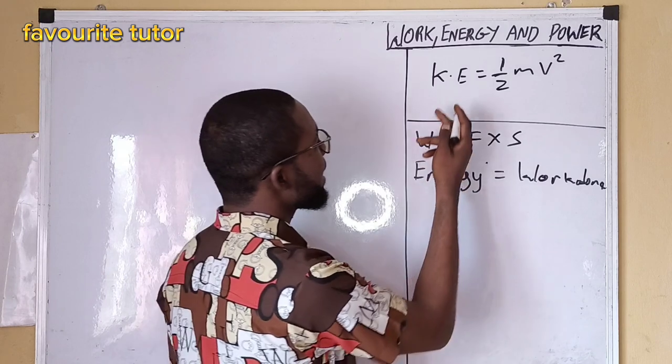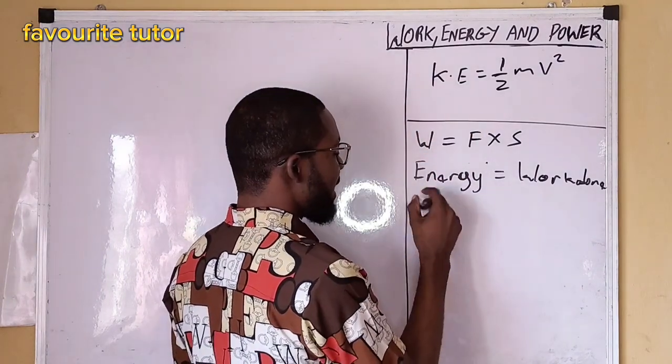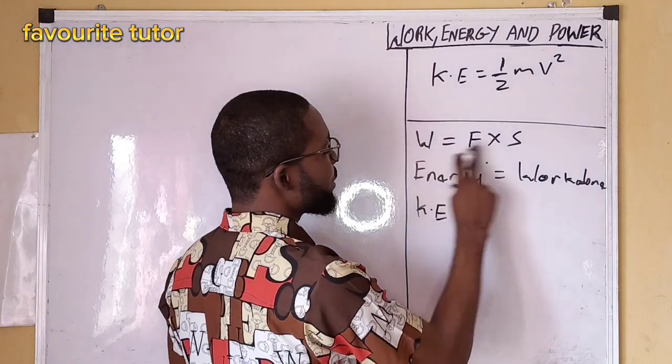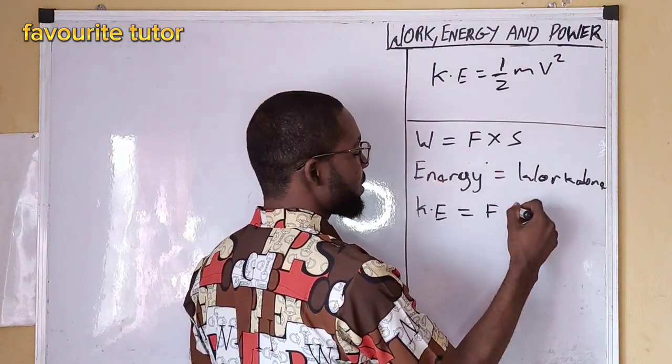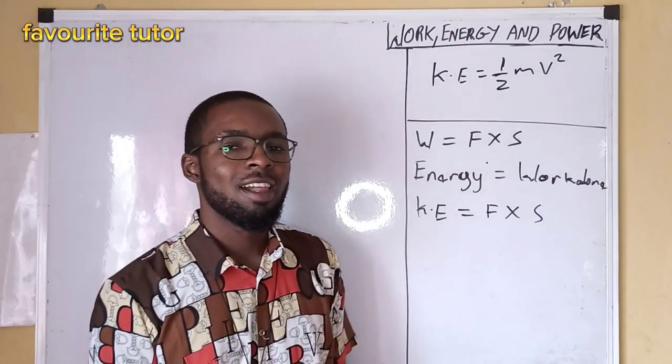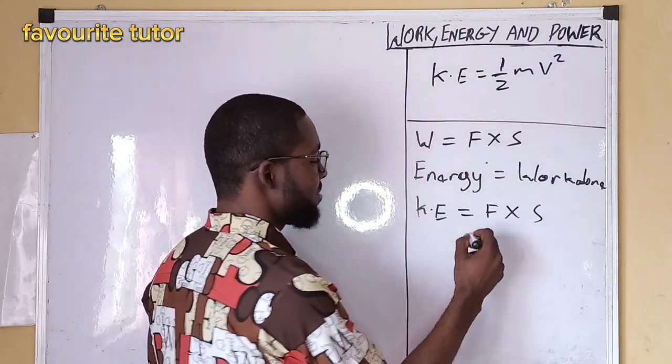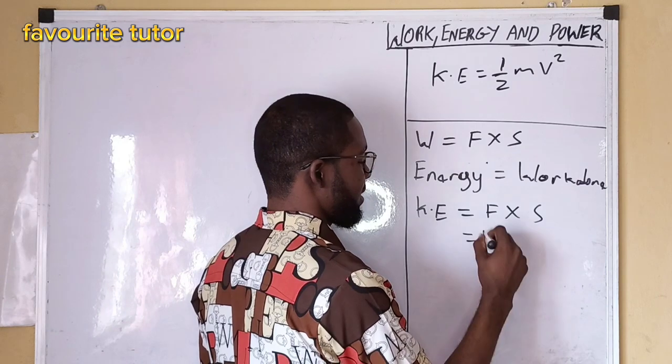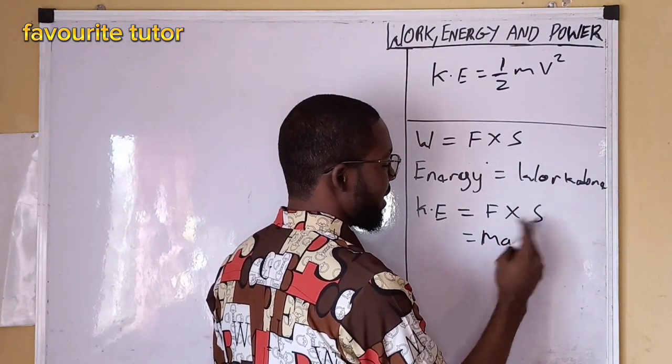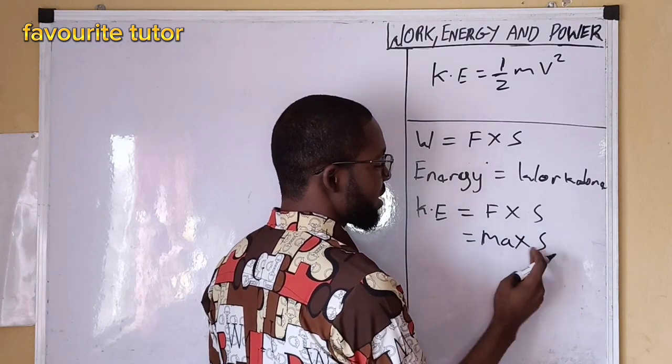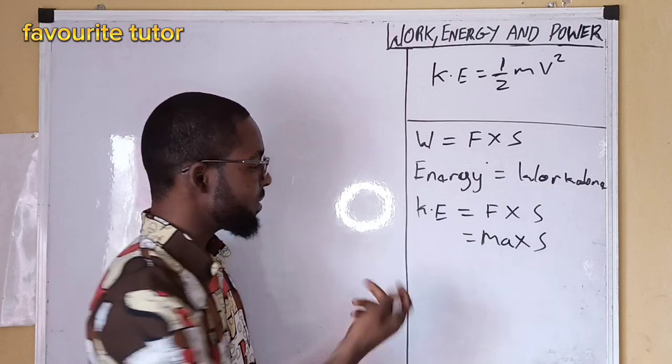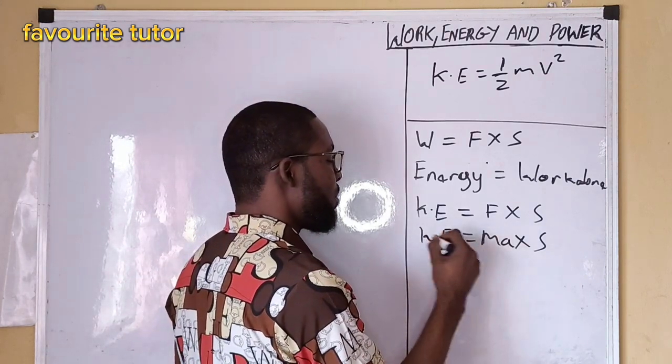So I can also say that kinetic energy equals what's the equation for work done? Force times distance, which is the same thing as what? Force is m a times distance, distance moved in the direction of the force.